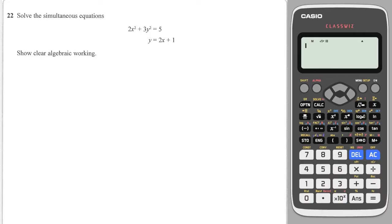Alright, long questions these ones, but very formulaic, very accessible. So first step is to make sure that your linear equation is in the form of y equals or x equals, which it already is. Fantastic. So we take what y is equal to and we put that into the y for the quadratic. So we write 2x squared plus 3, and not y anymore, but 2x plus 1 squared is equal to 5.